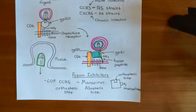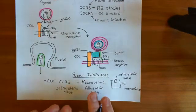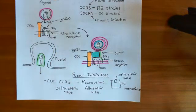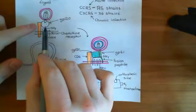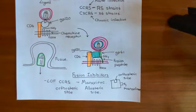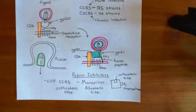There's one fusion inhibitor. By giving Maraviroc, which stops GP120 from being able to bind to CCR5, you therefore stop the HIV virions from being able to enter the cell — because without GP120 binding to CCR5, you can't get the conformational change in GP41 which causes fusion of the two membranes.